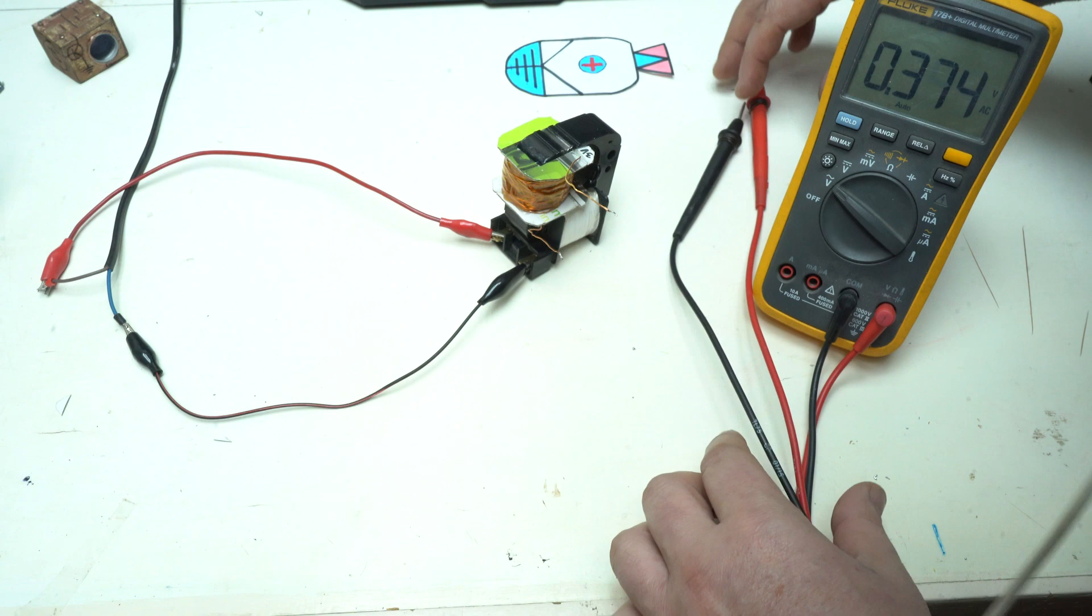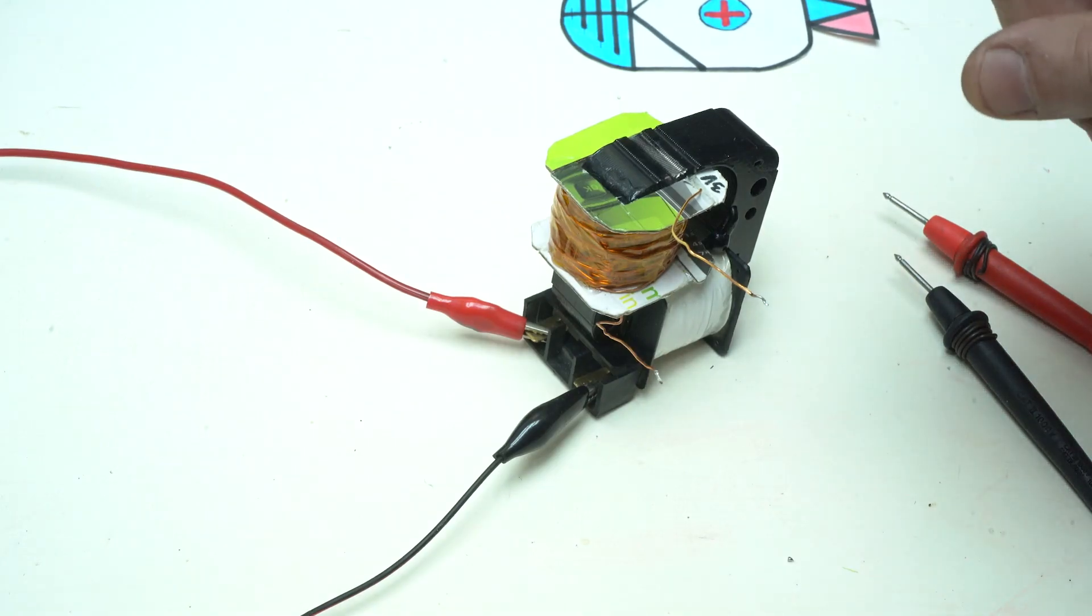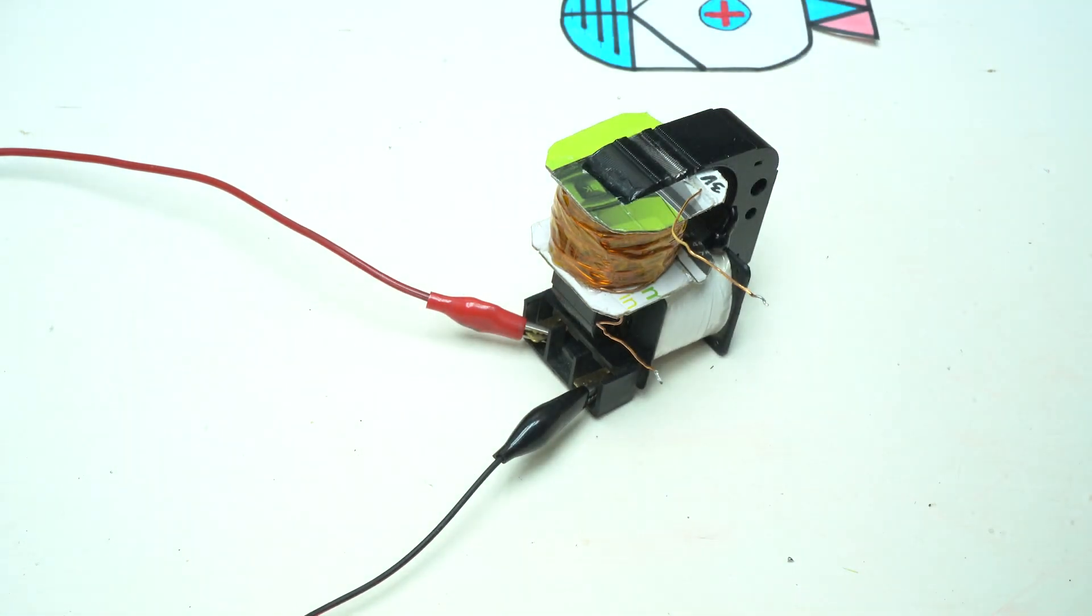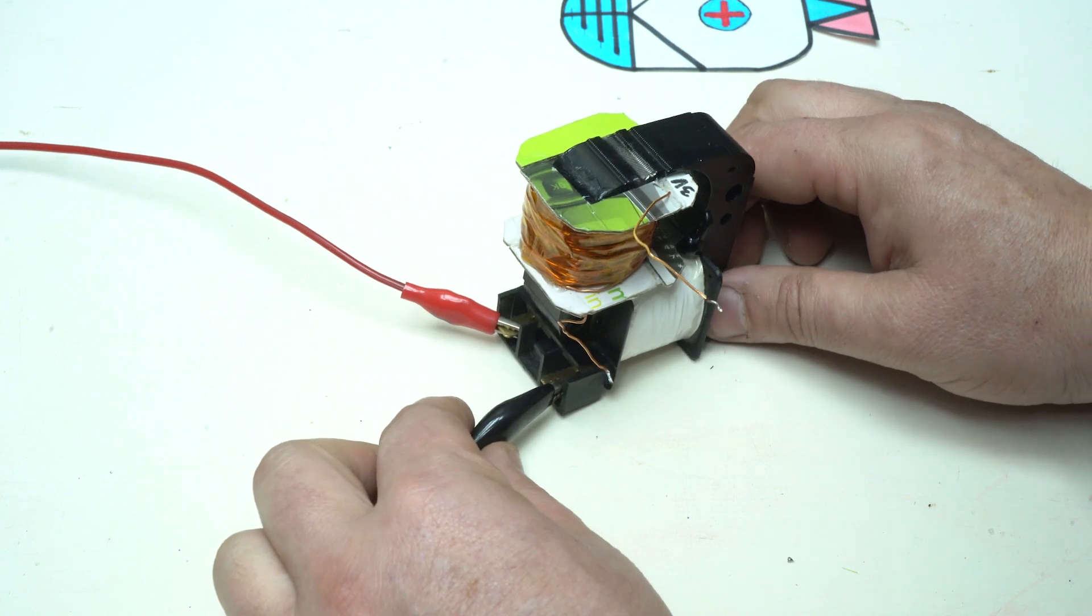That is enough for the experiment. But this thing is giving AC voltage. What does it mean? It means that we need to convert it into DC voltage, direct current from alternating current.